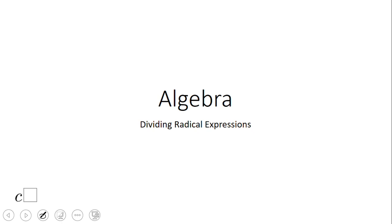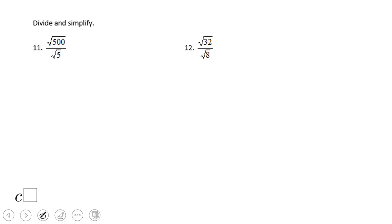Welcome, or welcome back, to C Square. In this video clip, we're going to talk about dividing radical expressions. I'm going to start with something very simple. In example 11, we have square root of 500 over square root of 5.